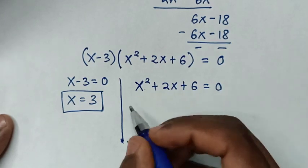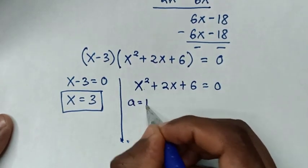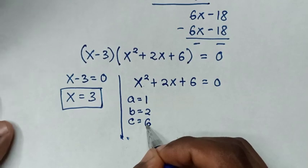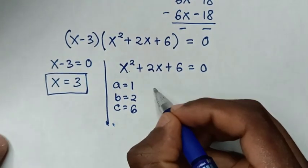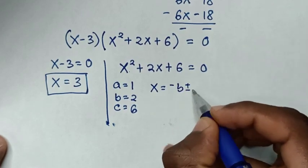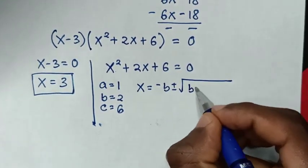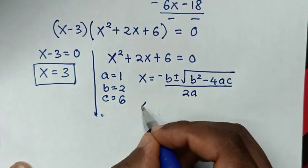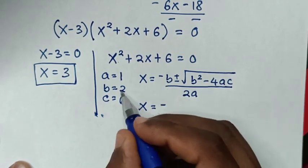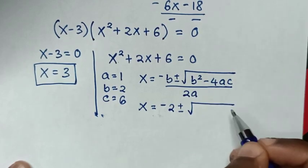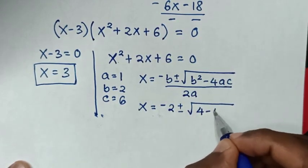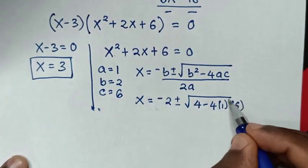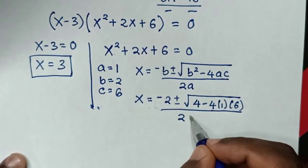From the quadratic equation x² plus 2x plus 6 equals 0, a is equal to 1 (coefficient of x²), b is equal to 2 (coefficient of x), and c is equal to 6 (the constant). From the quadratic formula: x equals negative b plus or minus square root of b² minus 4ac, over 2a.